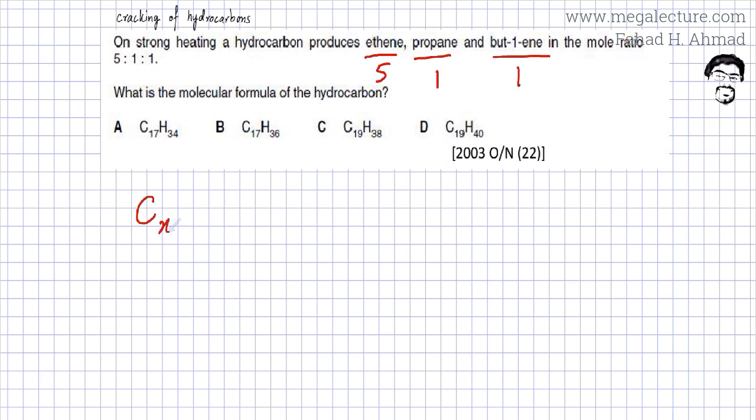So I don't know what the hydrocarbon is, let's call it CxHy. It's getting cracked and it's going to produce ethene which is C2H4, but 5 molecules of ethene. And then it produces 1 propane which is going to be C3H8.